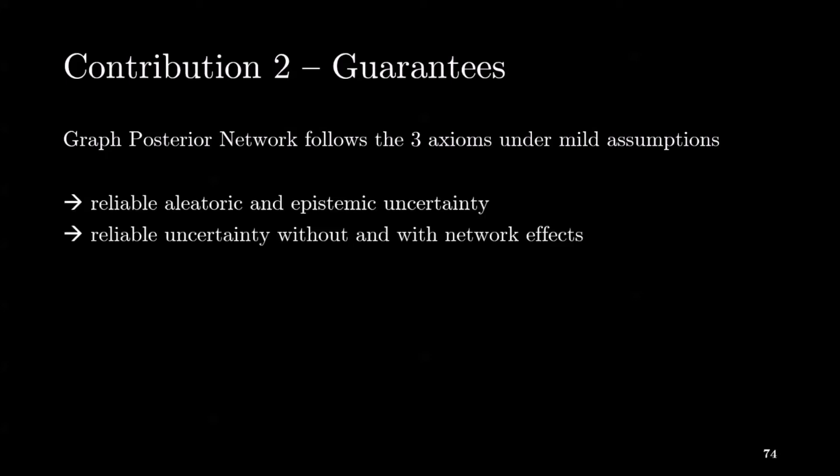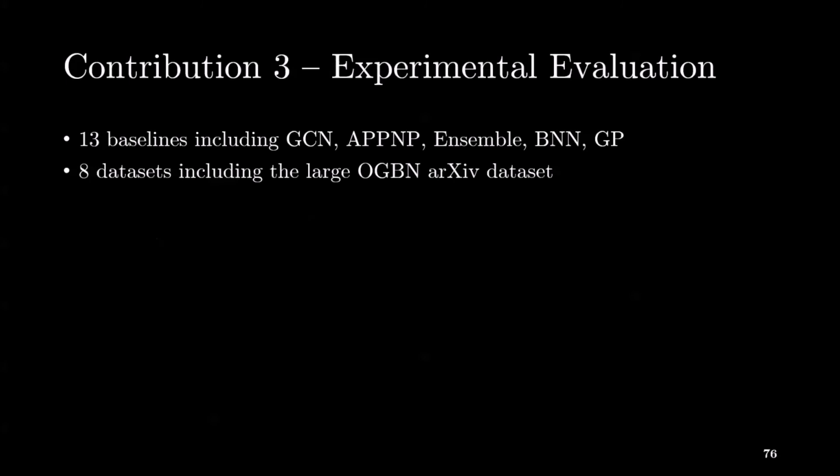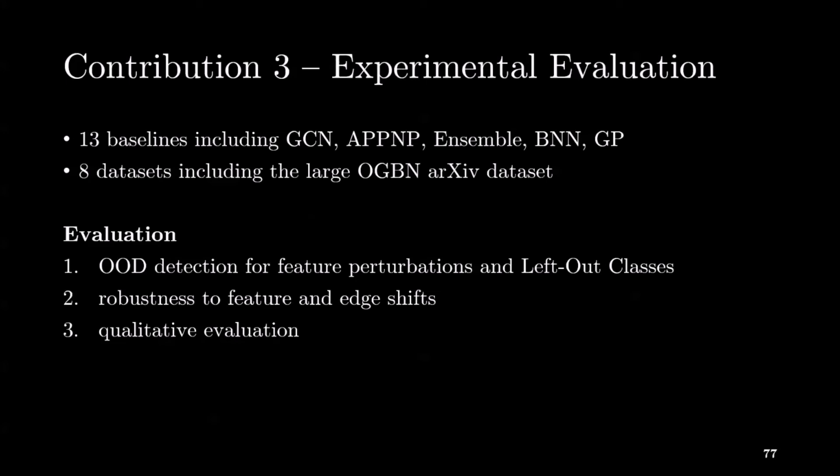Hence, GPN predicts reliable aleatoric and epistemic uncertainty without and with network effects. In our experiments, we consider 13 various baselines and use eight graph datasets with different sizes. Our evaluation focuses on uncertainty estimation for node classification. It uses OOD detection against feature perturbation and left-out classes, robustness to feature and edge shifts, and also qualitative results.